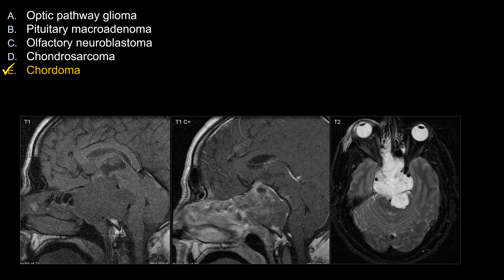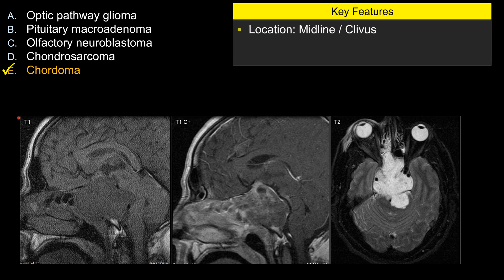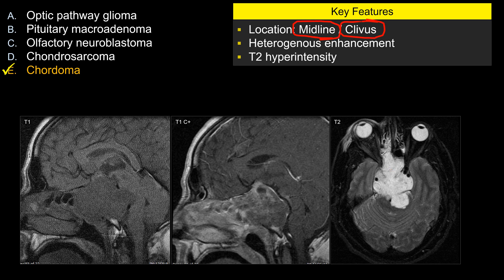Let's look at some of the image features that make E the best answer. You can see there's a mass lesion centered within the clivus with heterogeneous enhancement. This lesion is centered right in the midline, expanding outward and involving the clivus. The key thing is that it's very bright on T2-weighted sequence. For a board exam buzzword: think about a lesion involving the midline clivus with T2 hyperintensity — that's pretty good for chordoma.